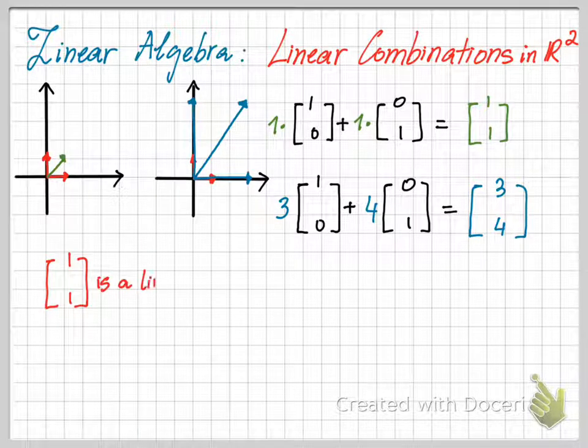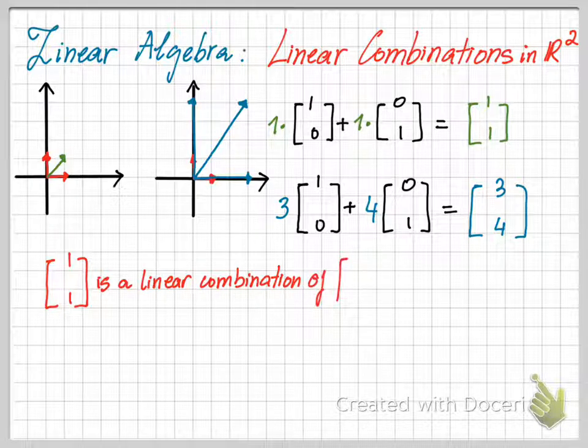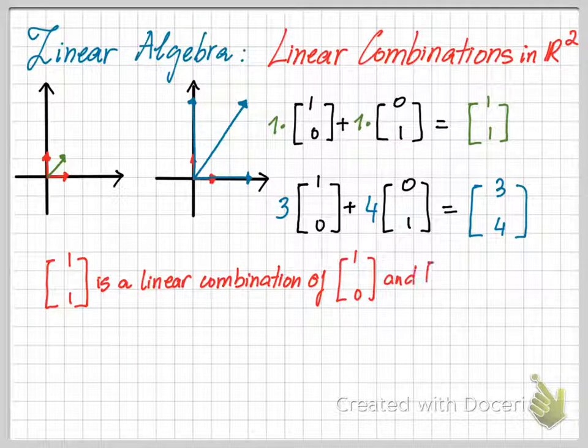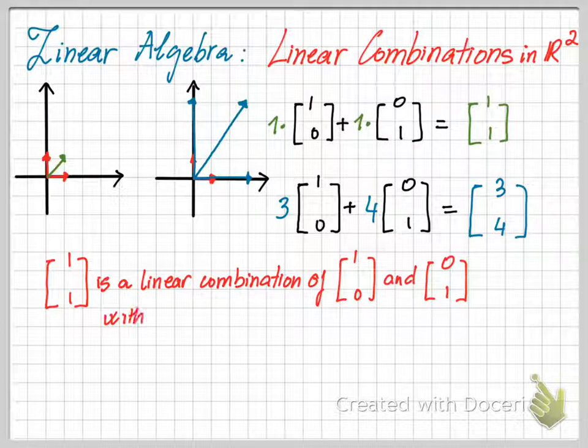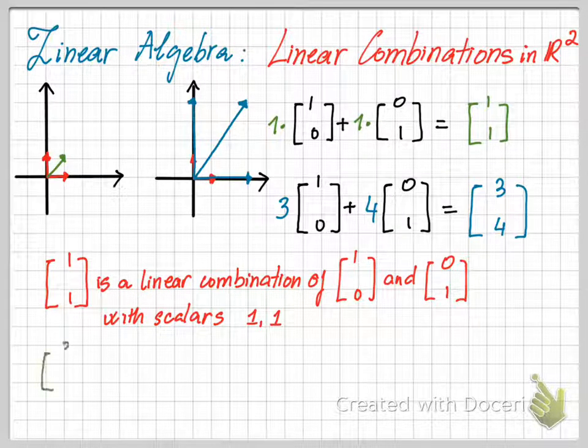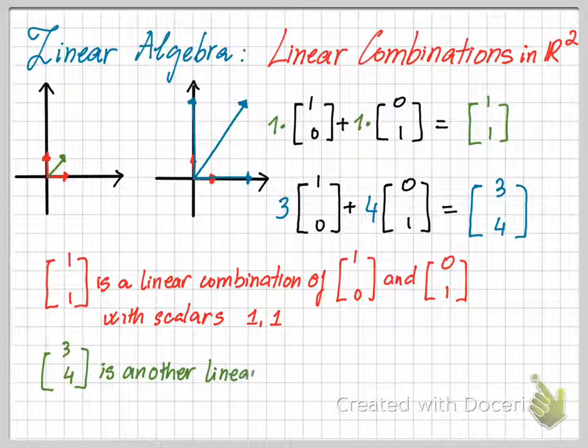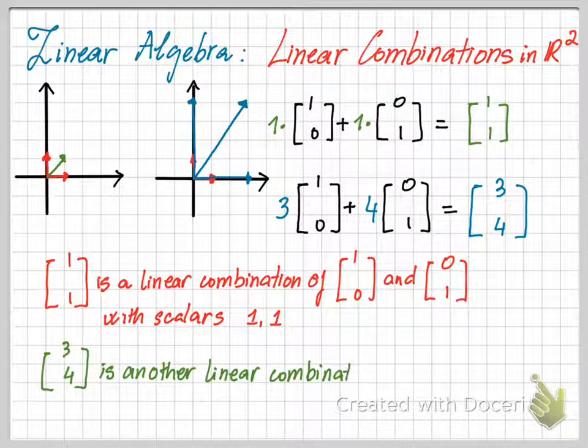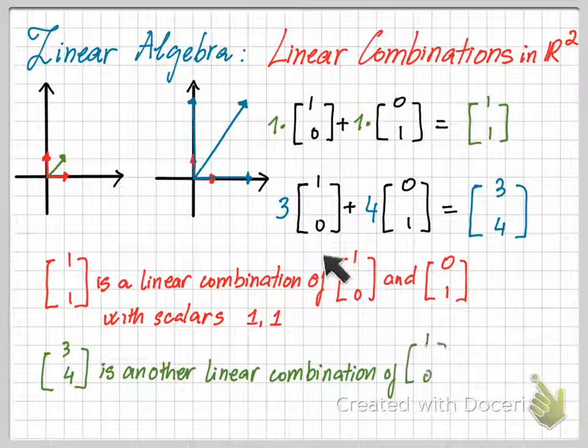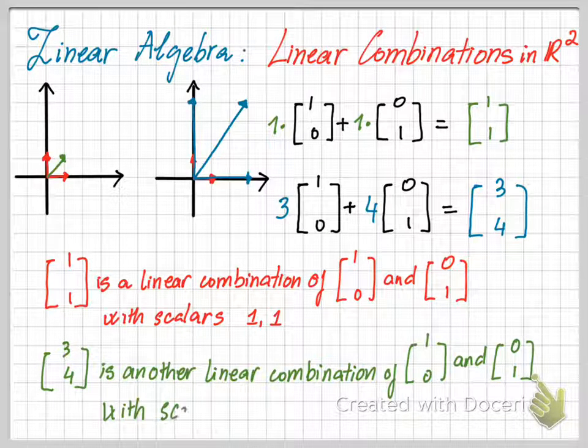By definition, the vector [1,1] is a linear combination of the two vectors [1,0] and [0,1] with scalars 1 and 1. Also, the vector [3,4] is another linear combination of the two vectors [1,0] and [0,1] with scalars 3 and 4.